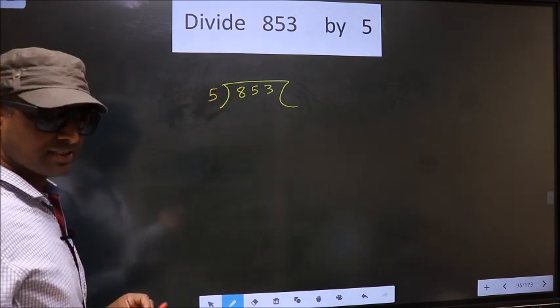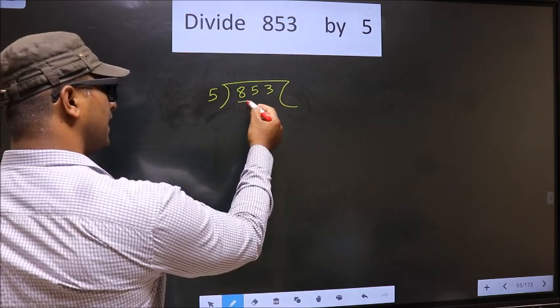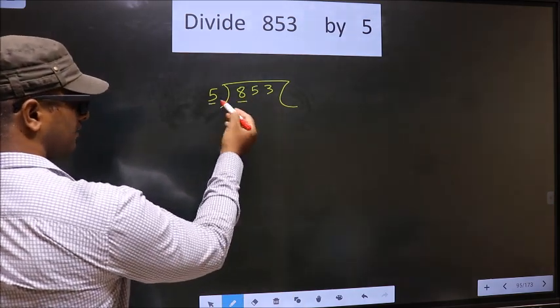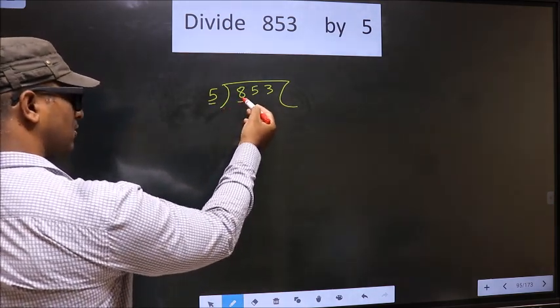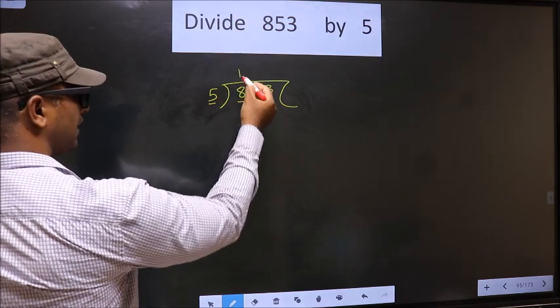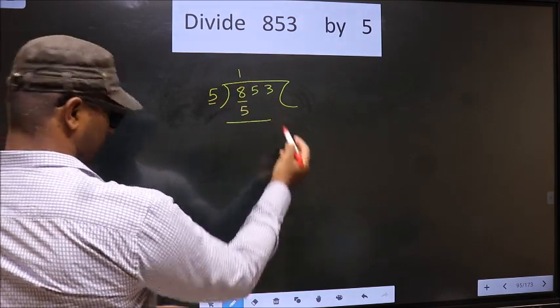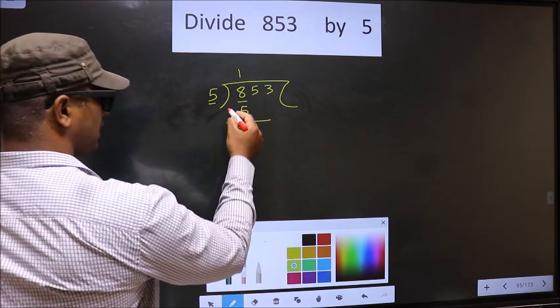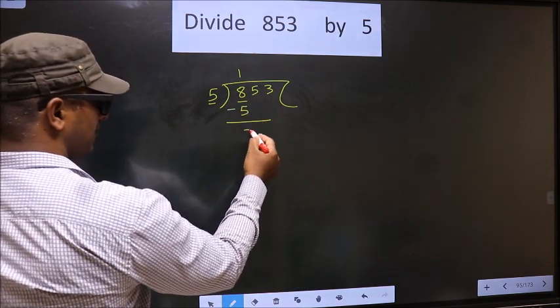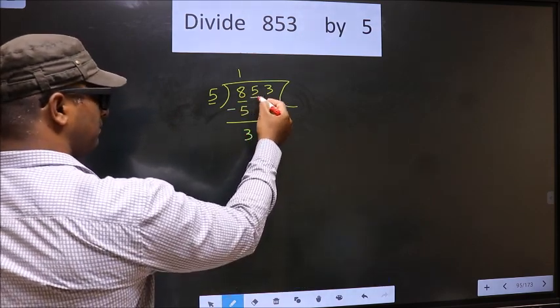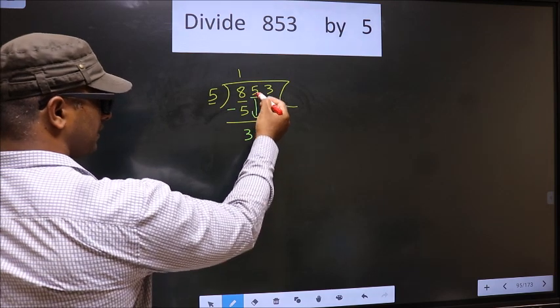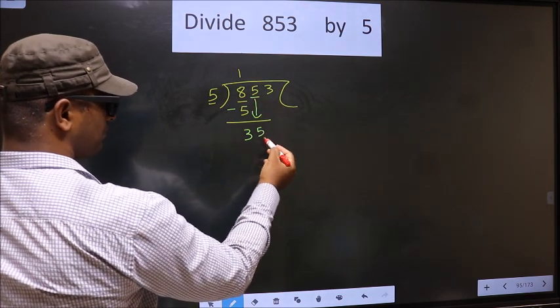Next, now here we have 8. Here 5, a number close to 8 in the 5 table is 5 once 5. Now you subtract: 8 minus 5 is 3. Now you will bring down the beside number, that is 5, down.